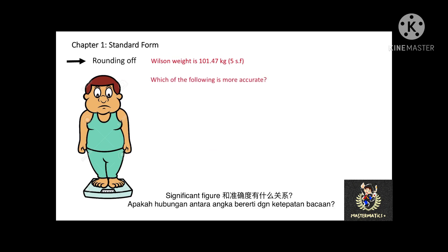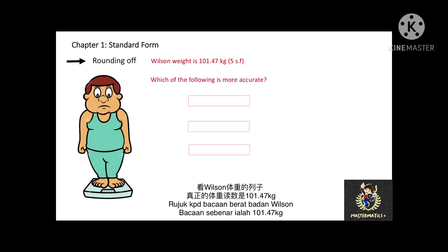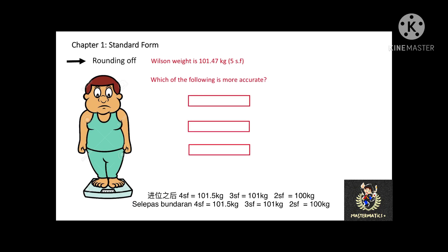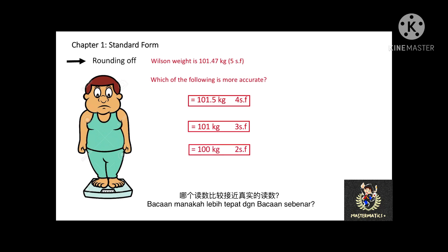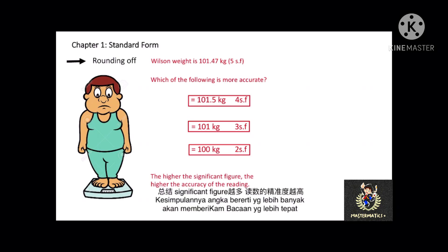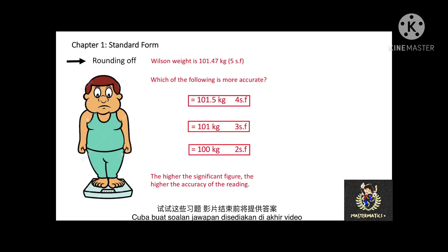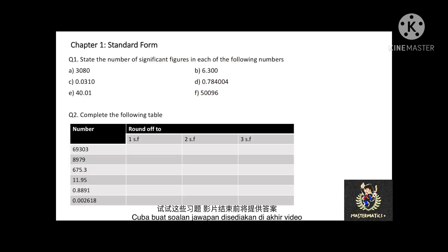What is the relationship between significant figures and the accuracy of a reading? For Mr. Wilson's weight: in 4 significant figures his weight is 101.5 kg; in 3 significant figures it is 101 kg; and in 2 significant figures it is 100 kg. In conclusion, the higher the significant figures, the higher the accuracy of the reading. You may pause the video for 5 minutes and try the practice question — answers are provided at the end of this video.